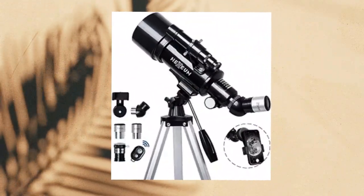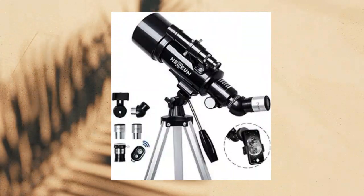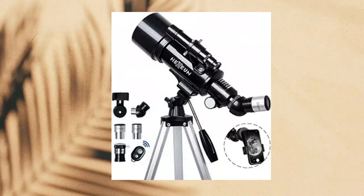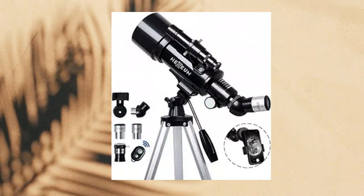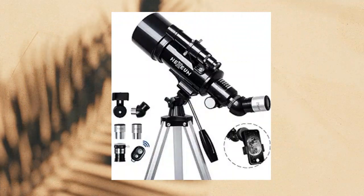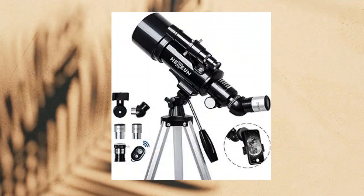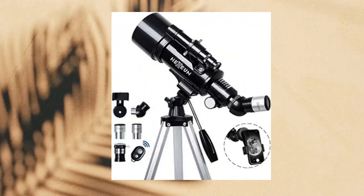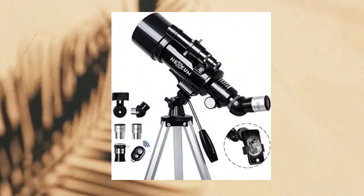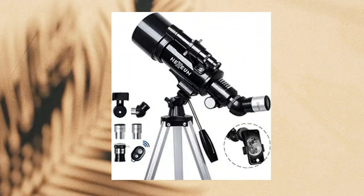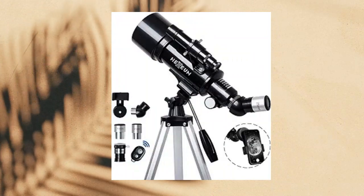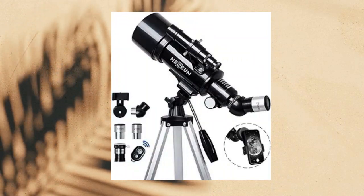Telescope for Kids and Adults. Explore the universe's wonders with our top-notch astronomical telescope. Boasting 500mm focal length and 70mm aperture, it offers breathtaking views and eye protection. Witness incredible magnification using two premium eyepieces, 25mm and 10mm, along with a 3x Barlow lens. A 5x24 finder scope simplifies object location.